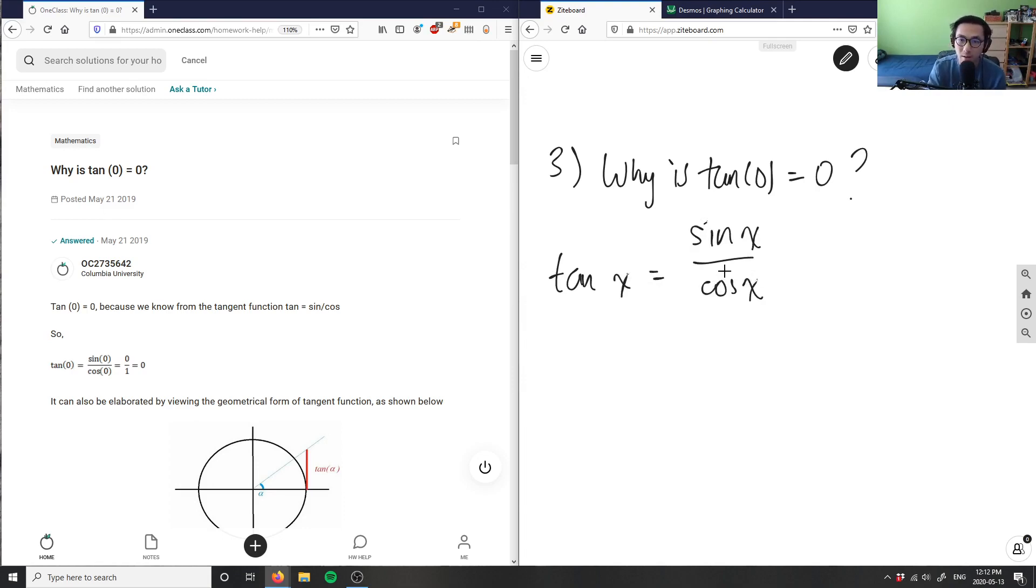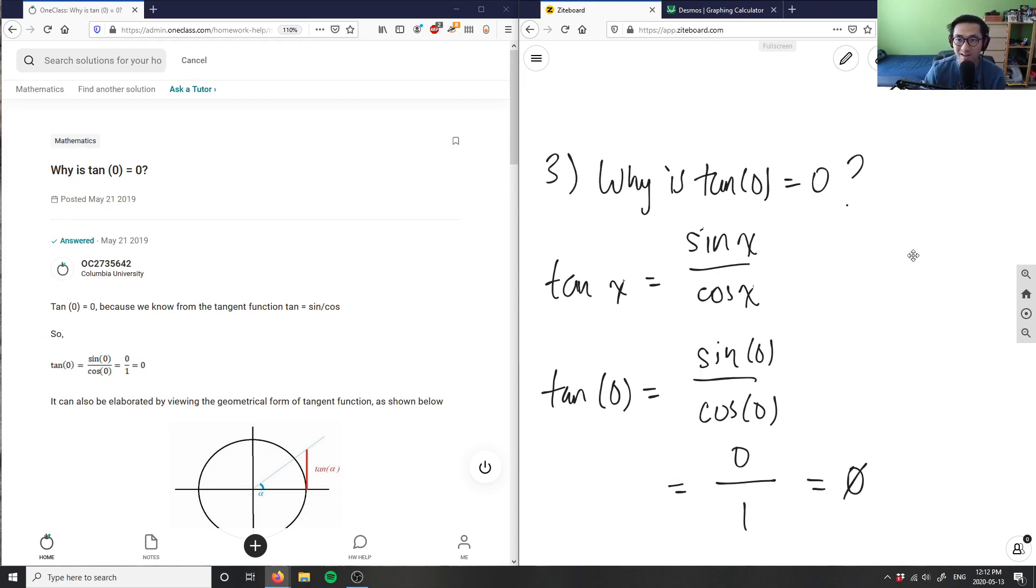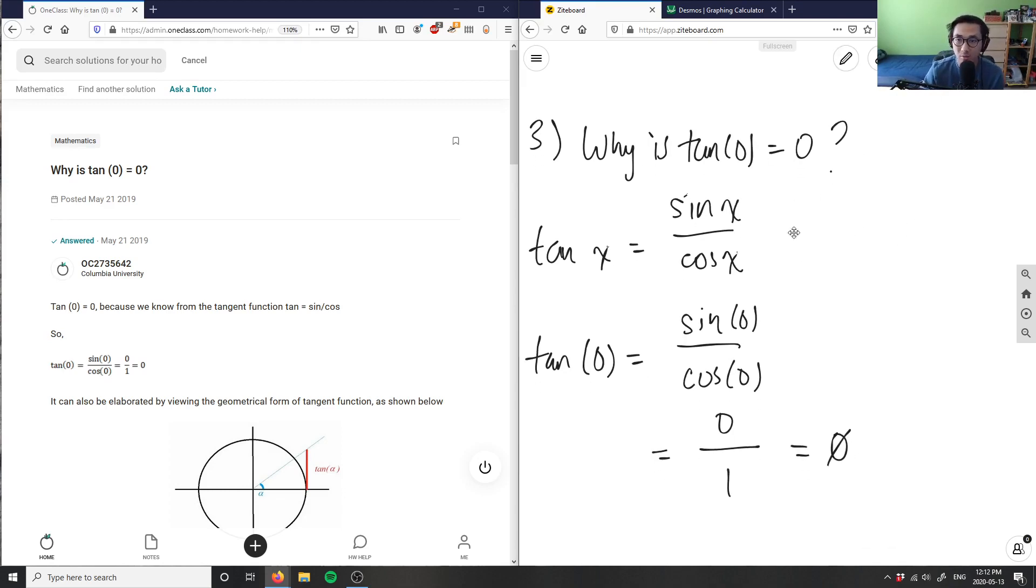If we're seeing tangent of zero, and I have tangent of zero, if x here equals zero, then isn't it sine zero over cos zero here? Which is simply, I know sine zero equals zero, and cos zero equals one. Therefore, zero divided by one here is zero. This is one way of figuring out, using an identity to figure out why tangent zero equals zero.